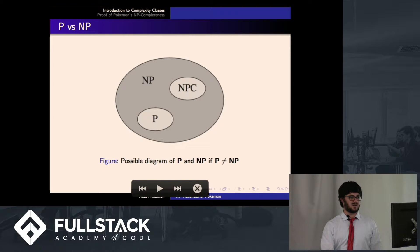This is a possible diagram of what P and NP might look like, and NPC, which is NP complete. This would be if P is not equal to NP.